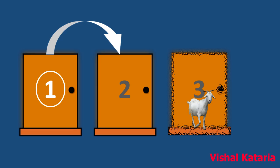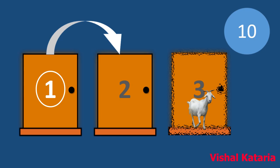I am giving you ten seconds to think over. Most of you must be thinking that it won't make any difference whether we stick to door number one or switch to door number two, because it seems that the probability of the car being behind door number one and two is the same — 50% or 1/2. If you are thinking along the same lines, then you are mistaken.